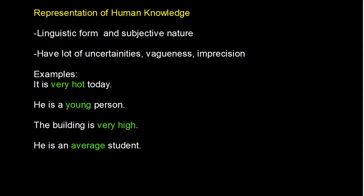To represent such linguistic information — for example: 'it is very hot today,' 'he is a young person,' 'the building is very high,' 'he is an average student' — is there any technique by which we can convert these linguistic words into mathematics? If we do not convert it into mathematics, we cannot make a software program, because to make a software program for any system it is very important to represent it mathematically. The important thing is that knowledge has a subjective nature and is full of uncertainties, vagueness, and imprecision.